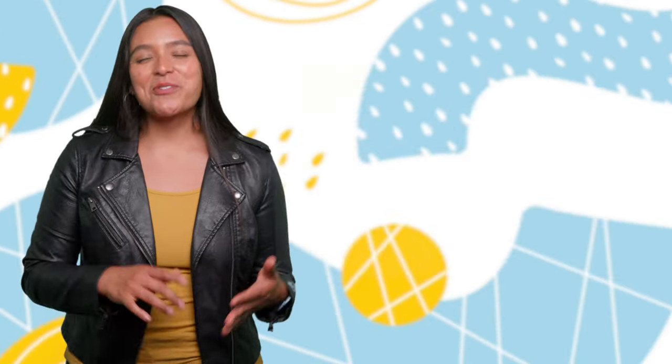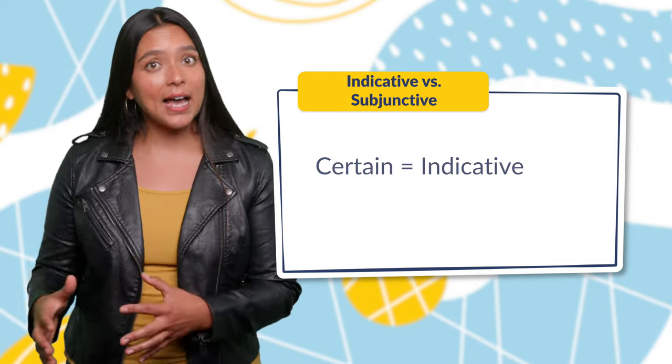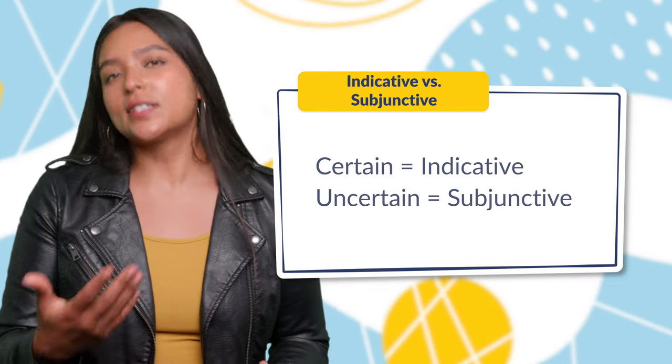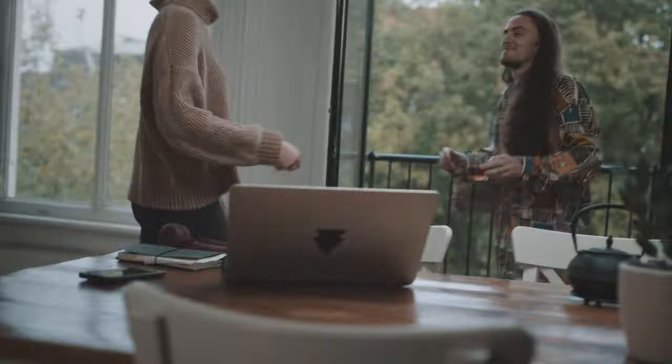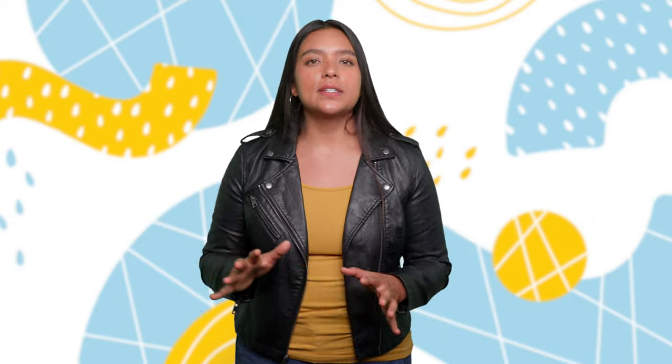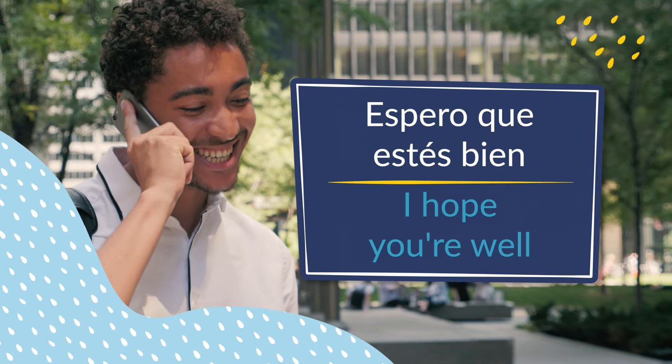The indicative and subjunctive can be confusing, but luckily we have a handy tip to help you. It's all about certainty or the lack of it. When we're certain about something or something is a fact, we use the indicative mood. When we're not sure or something is only a possibility, we use the subjunctive. For example, the indicative is 'Veo que estás bien' — 'I see that you're well.' Whereas the subjunctive is 'Espero que estés bien' — 'I hope you're well.' We use the indicative when something is true, and the subjunctive when something isn't a fact, but a desire, a probability, or a possibility.